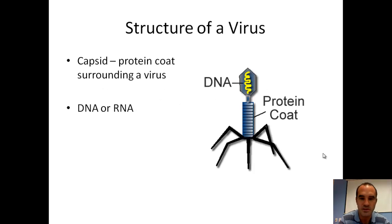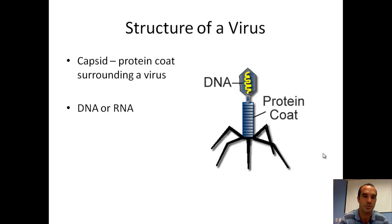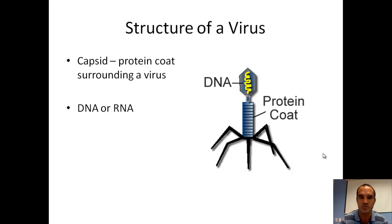First, looking at a virus, just the basic structure of a virus. It really only has two things going on. It's got its DNA — it can be DNA or RNA — and then it's got a protein coat. The name of that protein coat is called a capsid, and it's just the surrounding of the virus. It's really the only two structures that the virus has.